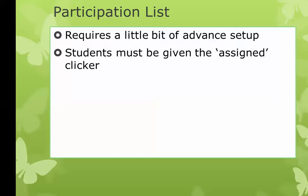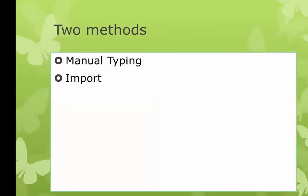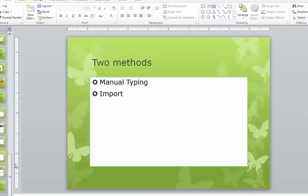I've seen people do this in ingenious ways — using little clear shoe holder bags with each student's name on one, and their clicker stays in that bag. Maybe you have a filing system, or people tape or put post-it notes on the clickers so students can easily find their name rather than having to remember a device ID, because device IDs are typically six characters and are a little hard to remember. There are two ways to create a participation list: manually type it directly into the clicker system, or import the information.